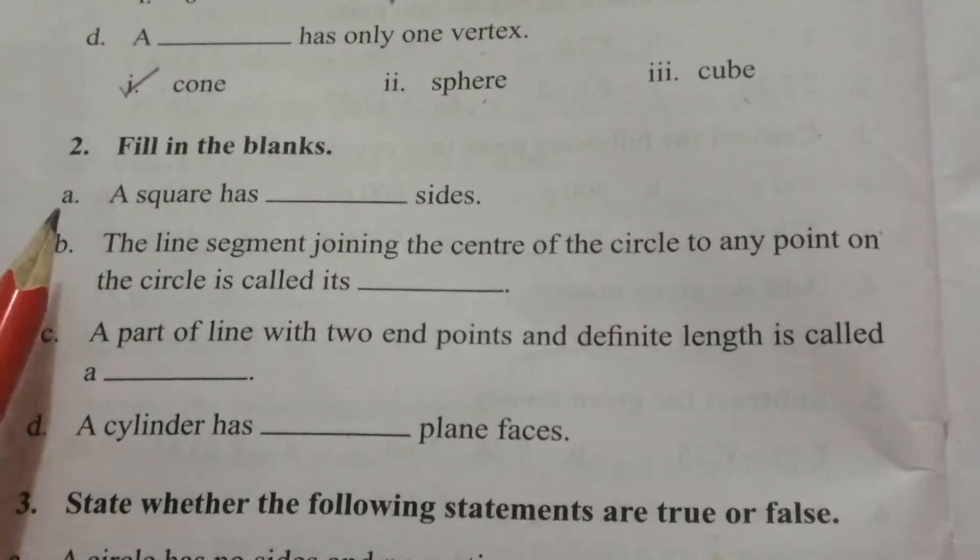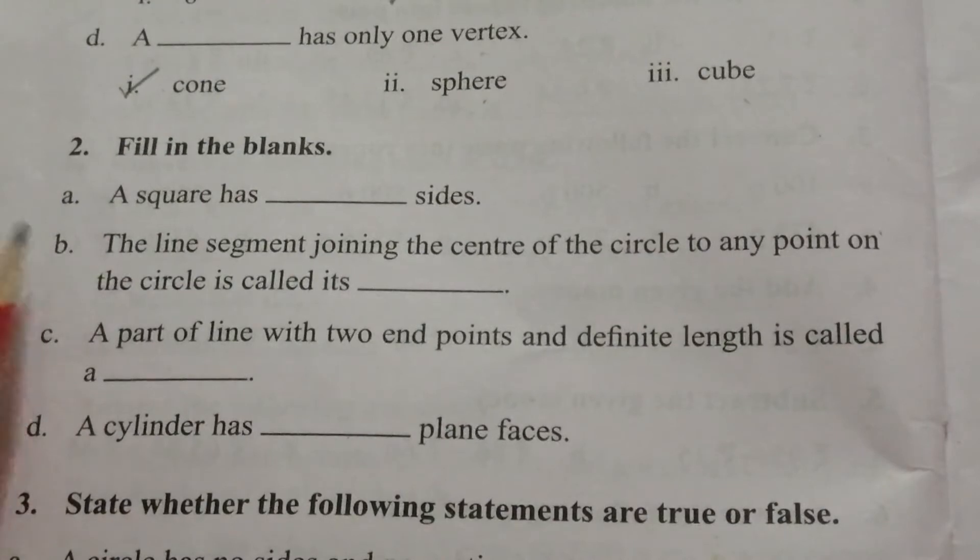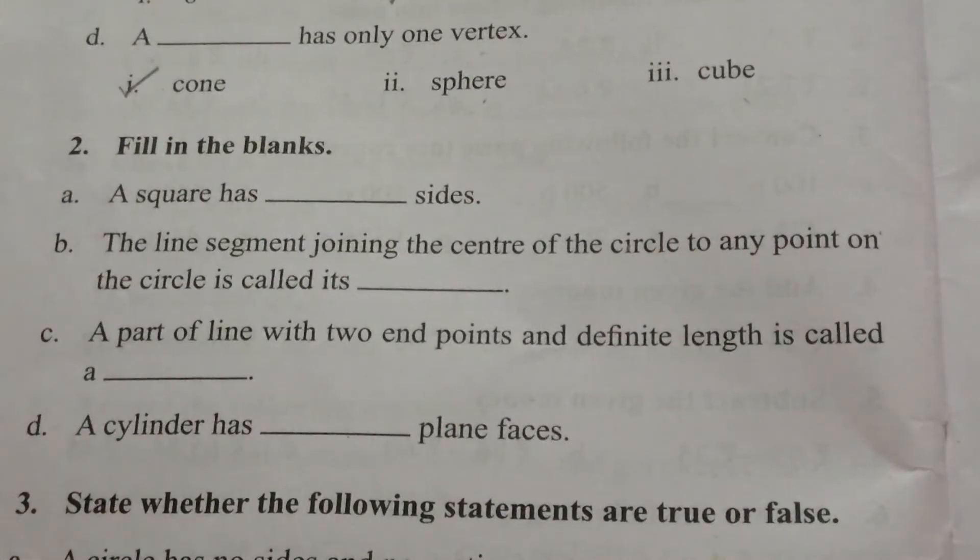2. Fill in the blanks. A. A square has blank sides. How many sides? 4 sides.